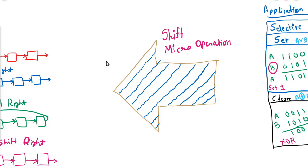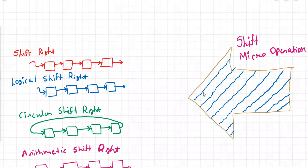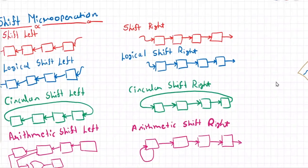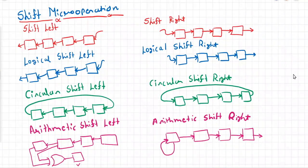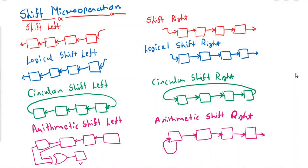Hello students, let us start our discussion. In the previous lecture we saw the applications of logic micro operations. Let us continue with shift micro operations. In this session we will learn the various types of shift operations and how they create different impacts on data. As you can see on the screen, I have created a figure for four types of shift: normal shift, logical shift, circular shift, and arithmetic shift. Shift operation is simply shifting bits in a particular direction.